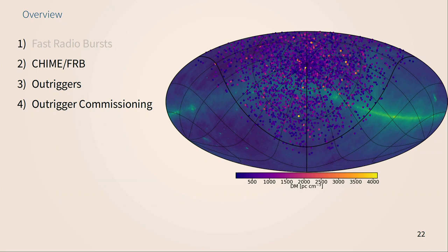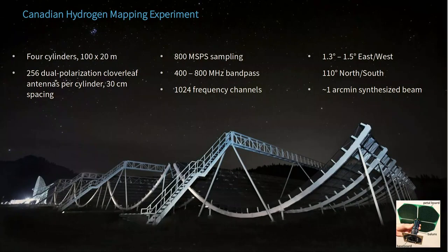A question about confirmation: if we can localize to a single galaxy — not have seven possible hosts in a calculation — and spot whether it's likely to be confused with something else, that's how we confirm the host.